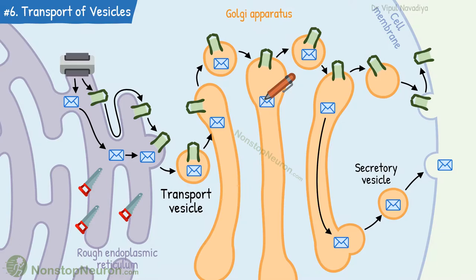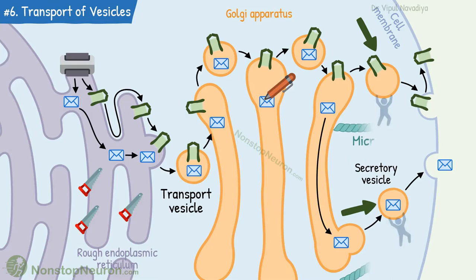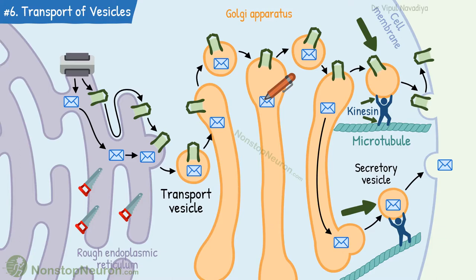The next point is regarding the transport of vesicles. We have seen that vesicles take proteins from one place to the other, but this movement is not random. The vesicles move along microtubules, which are part of the cytoskeleton. This movement is carried out by motor proteins like kinesin. They hold vesicles on one end and walk on the microtubules by the other end.